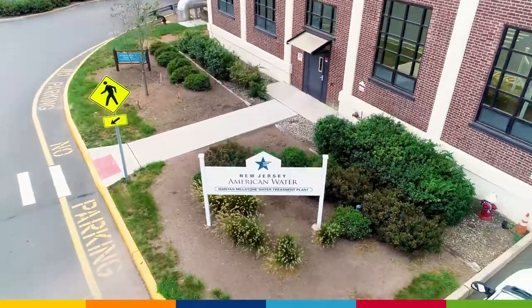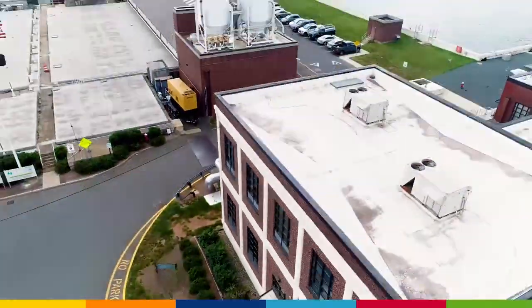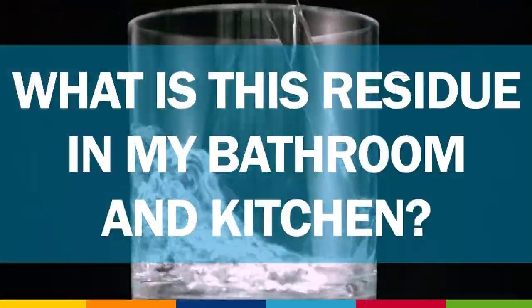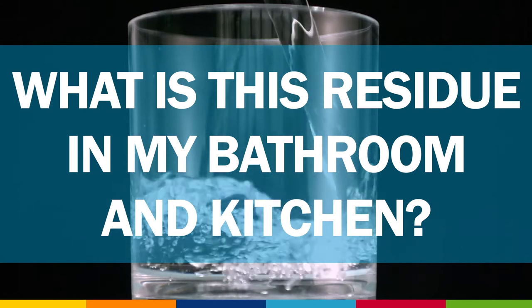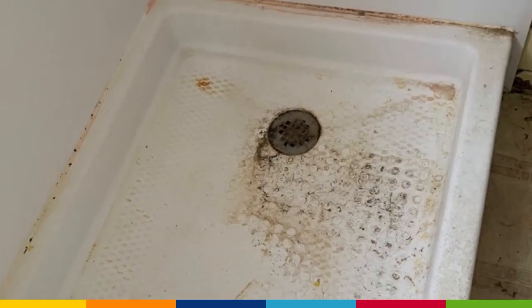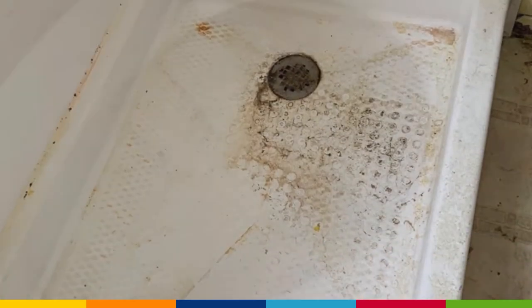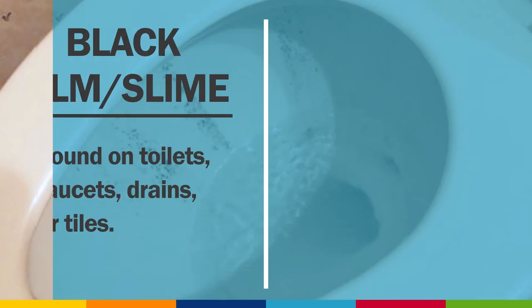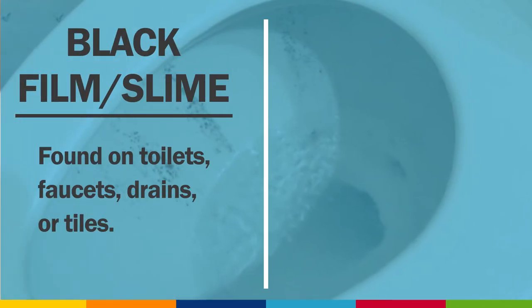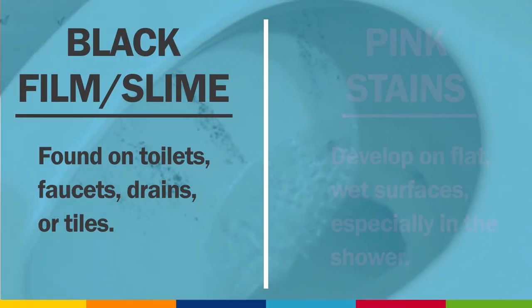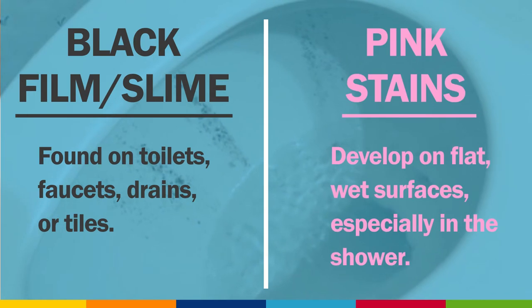At New Jersey American Water, our business is water. One question we're sometimes asked is: what is this residue in my bathroom and kitchen? Residue can build up on sinks, toilets, showers, and floors for a few different reasons. The two most common residues are black film or slime around the toilet, faucet, drain, or tiles, and pink stains that develop on flat, wet surfaces.